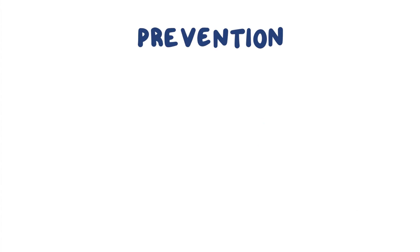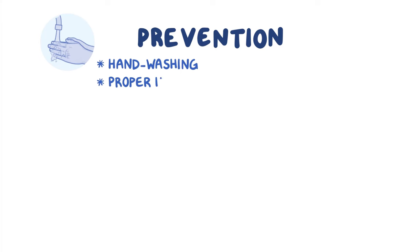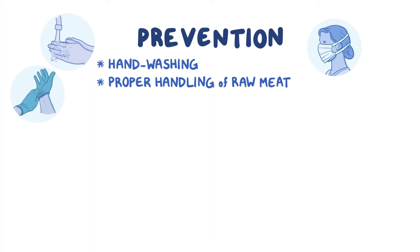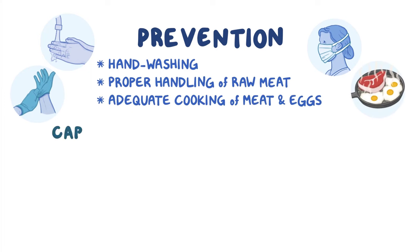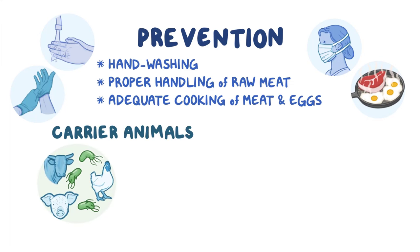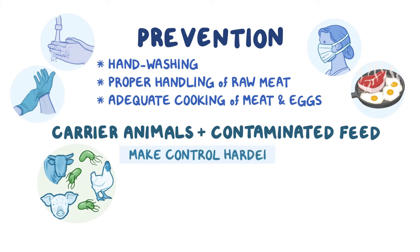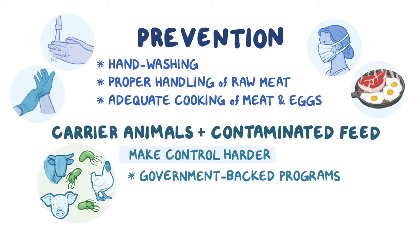Prevention is often the best course of action, and includes hand washing after touching raw meat or live animals, proper handling of raw meat to avoid cross-contamination while preparing foods, and adequate cooking of meat and eggs before eating. Carrier animals, which are asymptomatic adults that shed the bacteria, and contaminated feed are factors that make control harder in livestock. In many countries, government-backed programs have been introduced to reduce infection levels among food animals, especially poultry and pigs. Vaccines are available for some animal species and may reduce symptoms along with lowering herd infection rates.